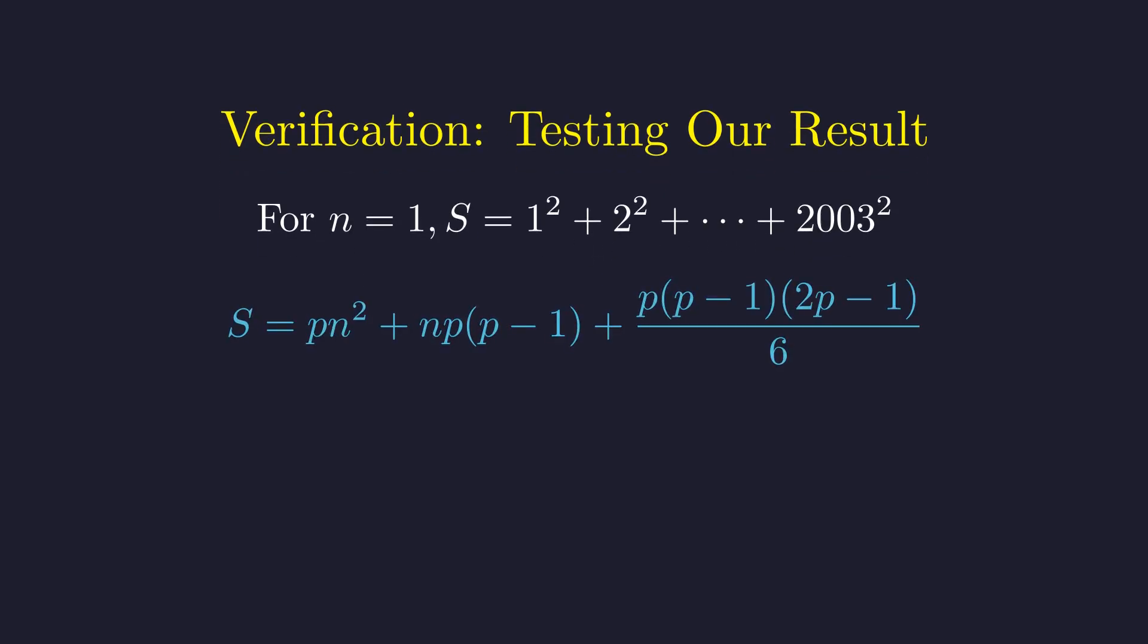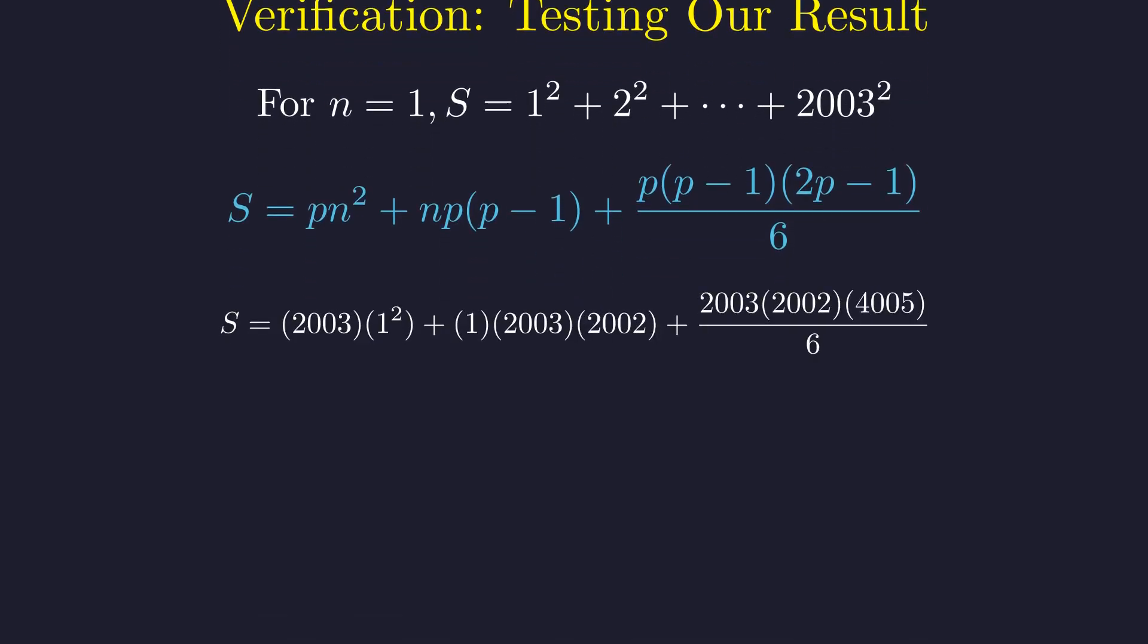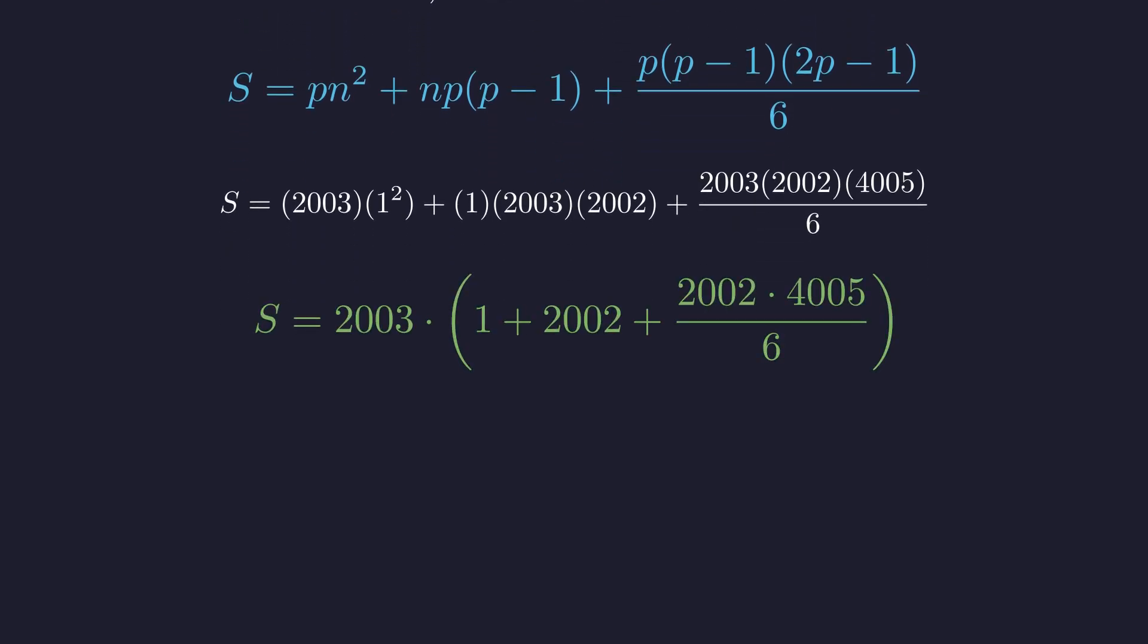Substituting p equals 2003 and n equals 1 into our derived formula, we get this expression. Observe that 2003 is a common factor in every term. We can factor out 2003, and the remaining expression is clearly an integer. This confirms our theoretical result. The sum is divisible by 2003.